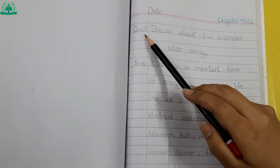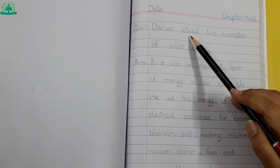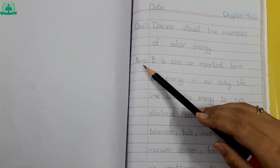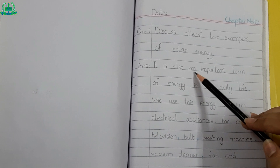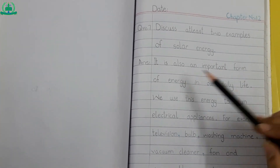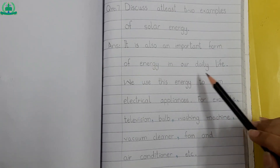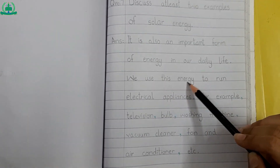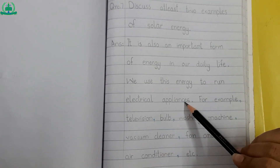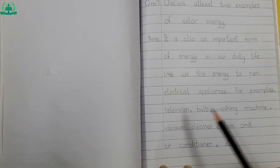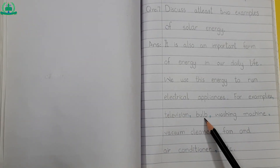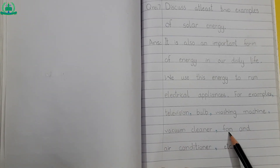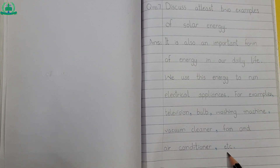Question number 7: Discuss at least two examples of solar energy. Answer: Electrical energy is also an important form of energy in our daily life. We use this energy to run electrical appliances, for example television, bulb, washing machine, vacuum cleaner, fan, and air conditioner, etc.